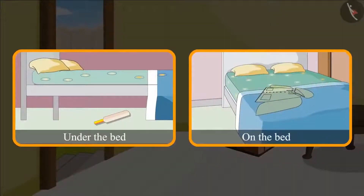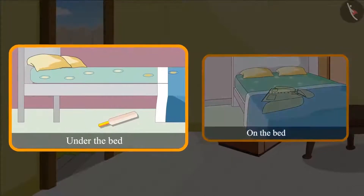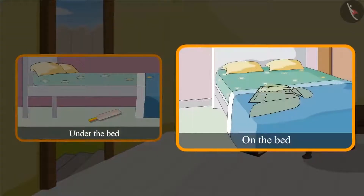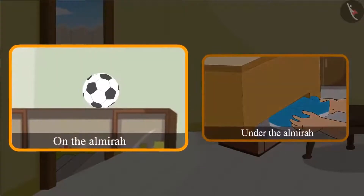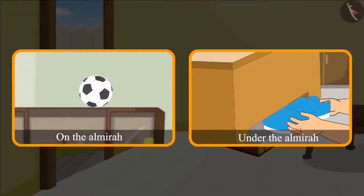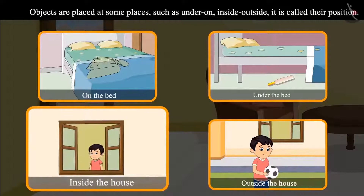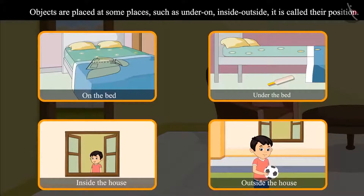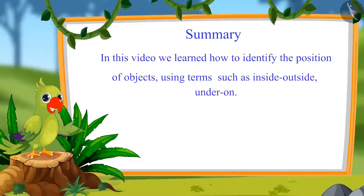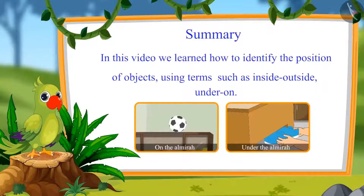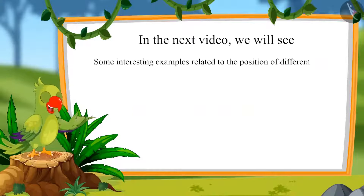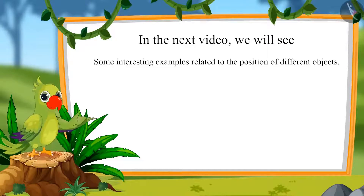Children, did you see where Chotu's bat was kept? Chotu's bat was kept under the bed and his raincoat was kept on the bed. His mother took the ball from on top of the almira, and Chotu's shoes were under the almira. So children, objects are kept at certain places and words such as under, on, inside, and outside are used to exactly tell us their position. That's all for today. In the next video, we will see some interesting examples related to the position of different objects. Till then, bye children.